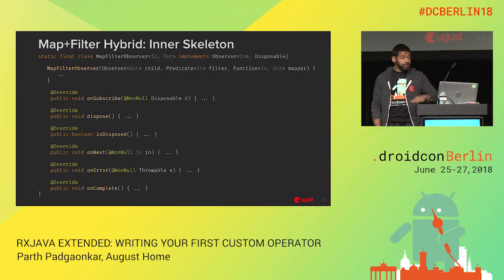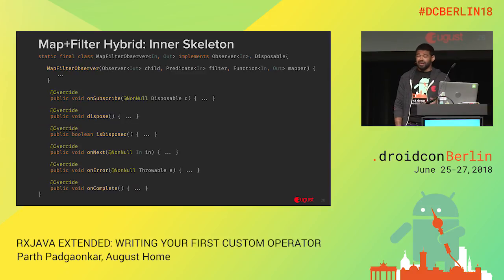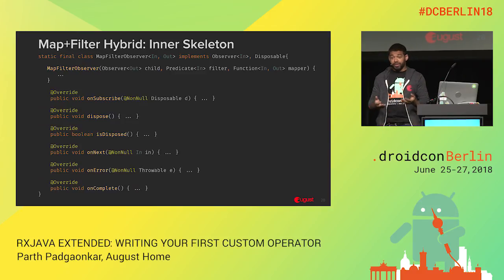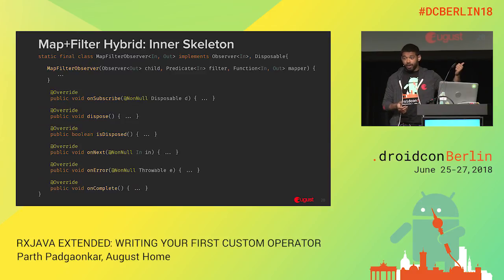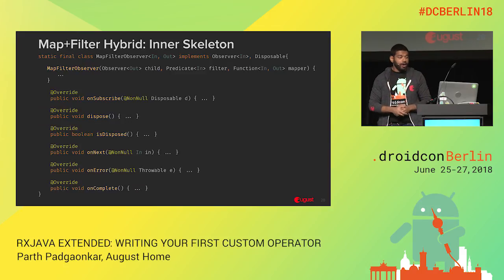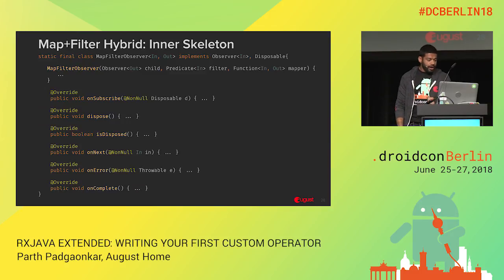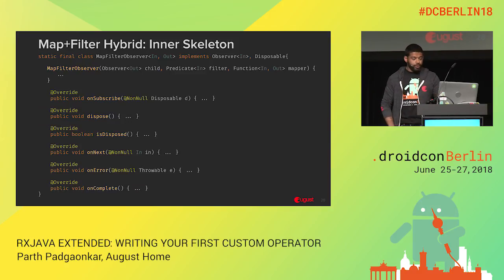We have a constructor that takes a predicate for the filter and a function for the map. The mapping function takes both In and Out, whereas the predicate only takes In. Once again, we have a subscribeActual block, and we're passing everything in, handling subscription and everything inside the actual inner observer. The inner observer has more things going on because we have to handle disposal from both upstream and downstream and pass any disposal information downstream as well, since we're in the middle.